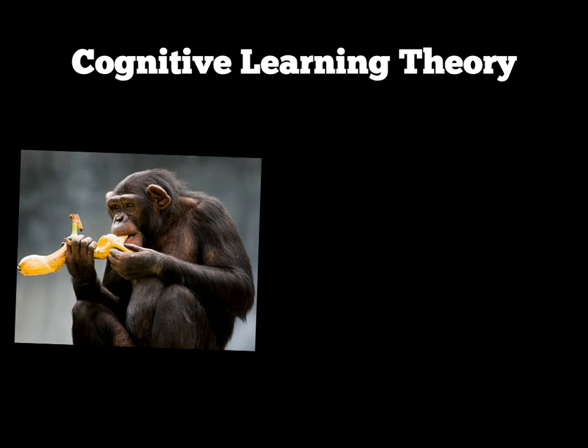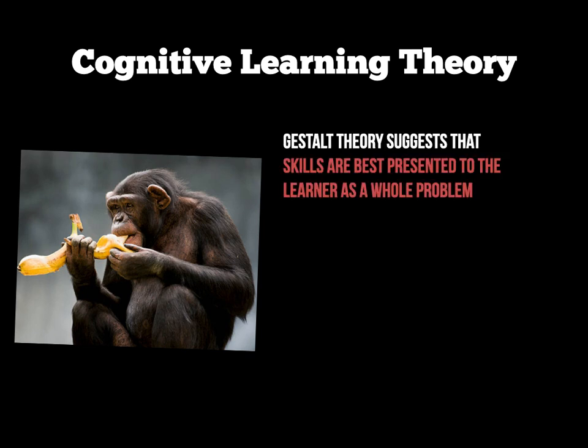Cognitive Learning Theory differs from Social Learning Theory and Operant Conditioning in the sense that the starting process involves giving the learner a whole problem or task to solve. You are giving the whole task or problem straight away to the learner, rather than breaking it into parts or advising them to watch somebody else perform it.